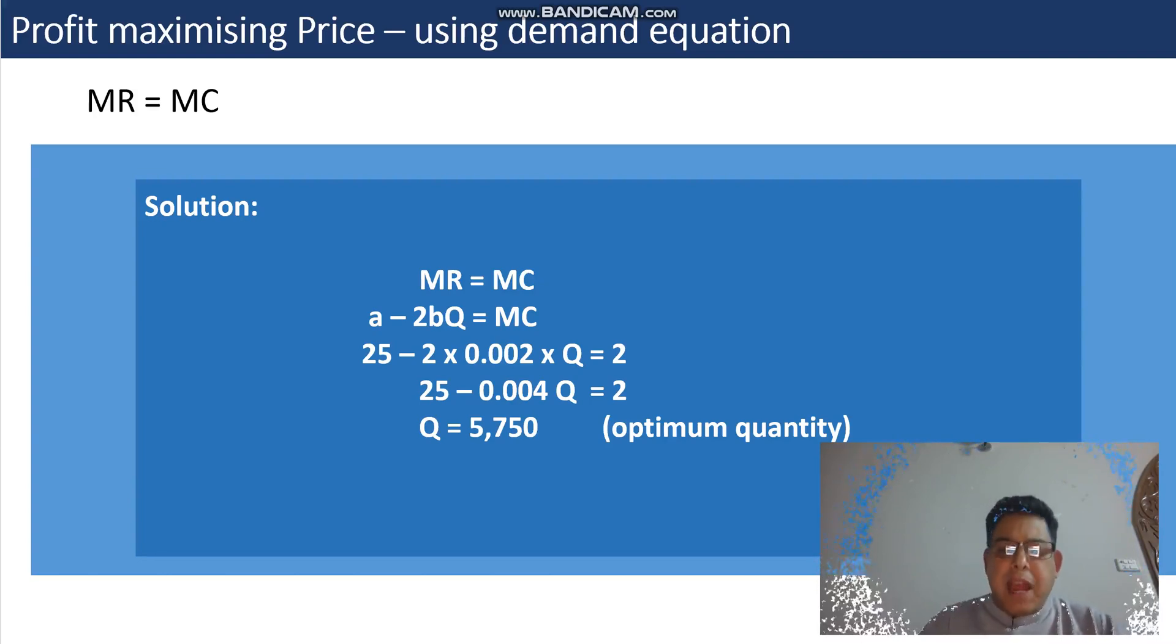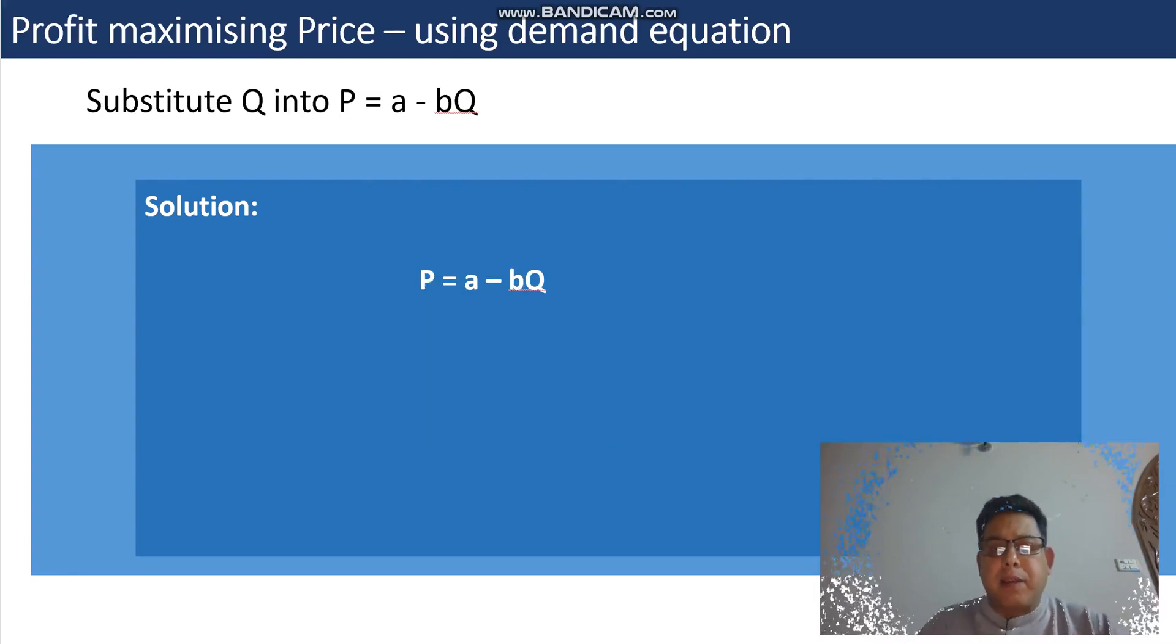Once we have the optimum quantity Q, this would be substituted into the demand equation which is P = a - bQ. So let's insert all the variables we know already. A was given, b was given, and Q we have just calculated.